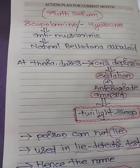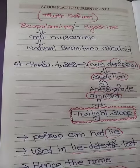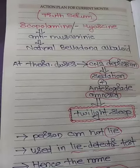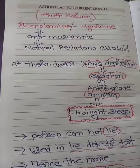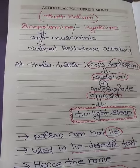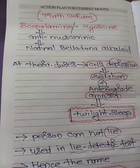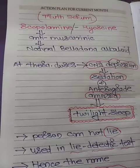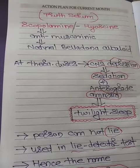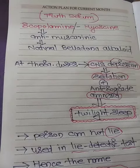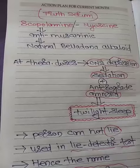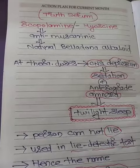Scopolamine is also called hyoscine, because scopolamine or hyoscine is obtained from the plant Hyoscyamus niger. Scopolamine and hyoscine are anti-muscarinic agents, or anti-cholinergic agents. These are natural belladonna alkaloids.